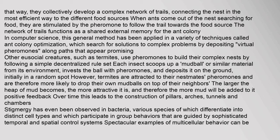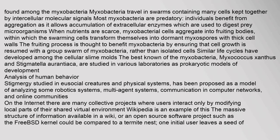Stigmergy has even been observed in bacteria, various species of which differentiate into distinct cell types and participate in group behaviors guided by sophisticated temporal and spatial control systems. Spectacular examples of multicellular behavior can be found among the myxobacteria, which travel in swarms containing many cells kept together by intercellular molecular signals. Most myxobacteria are predatory; individuals benefit from aggregation as it allows accumulation of extracellular enzymes used to digest prey. When nutrients are scarce, myxobacterial cells aggregate into fruiting bodies, within which swarming cells transform into dormant myxospores with thick cell walls. The best-known myxobacteria, Myxococcus xanthus and Stigmatella aurantiaca, are studied in various laboratories as prokaryotic models of development.